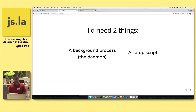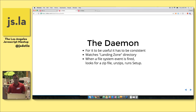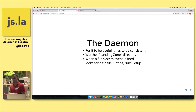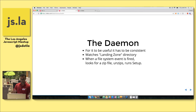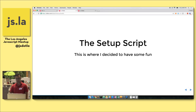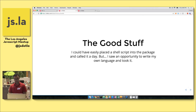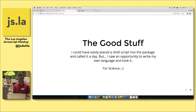The second part is the setup script itself — basically a list of instructions that would unbundle the project and get it up and running. For the daemon process to be consistent, I thought the best approach was to have a landing zone, a watched directory, and whenever a file was added, it would look for a zip file, unzip it, and run the setup script. The setup script is where the DSL actually comes in, and it's where I decided to have a little fun. I could have placed a shell script in the package, but I saw this as an opportunity to write my own language — and I took it for science.